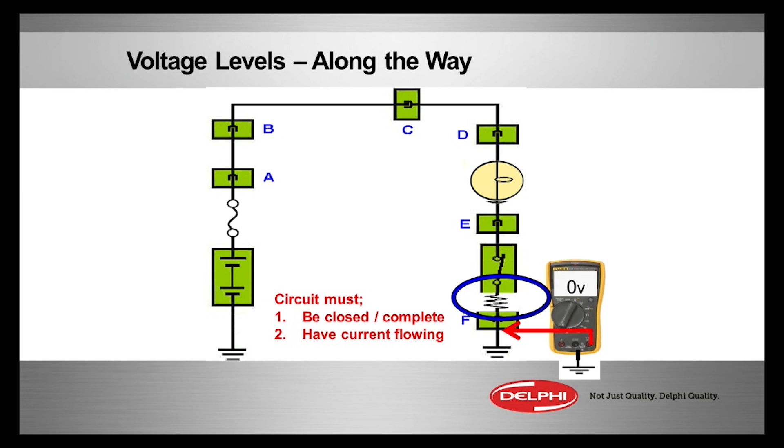The problem is right there between the ground and the ground source to the switch. And that's because we have some kind of a corrosion issue, rust issue, loose connection, something of that nature causing an unwanted voltage drop in this circuit.